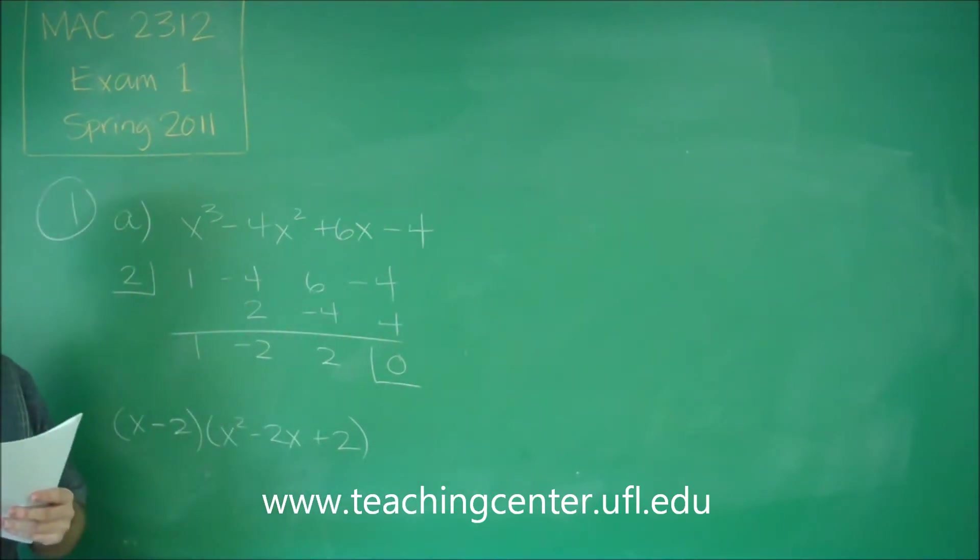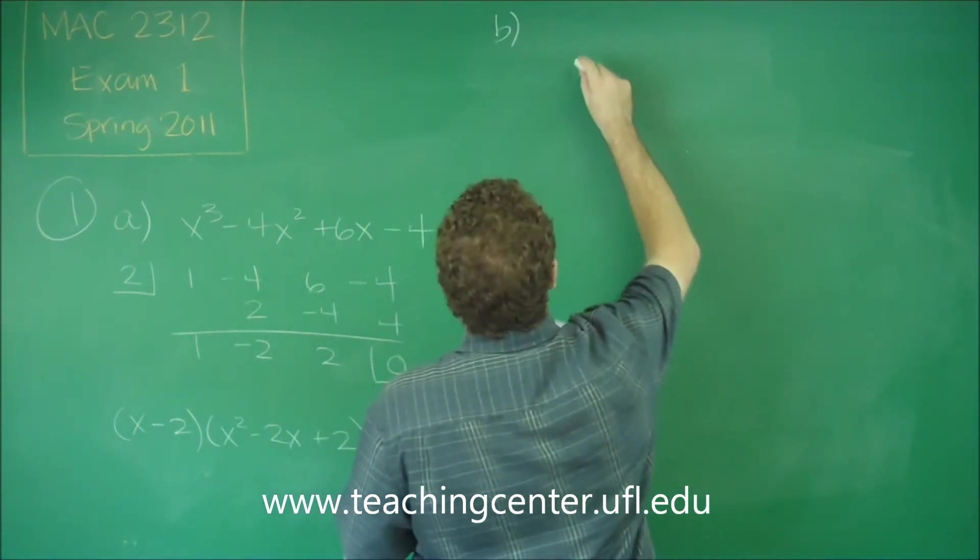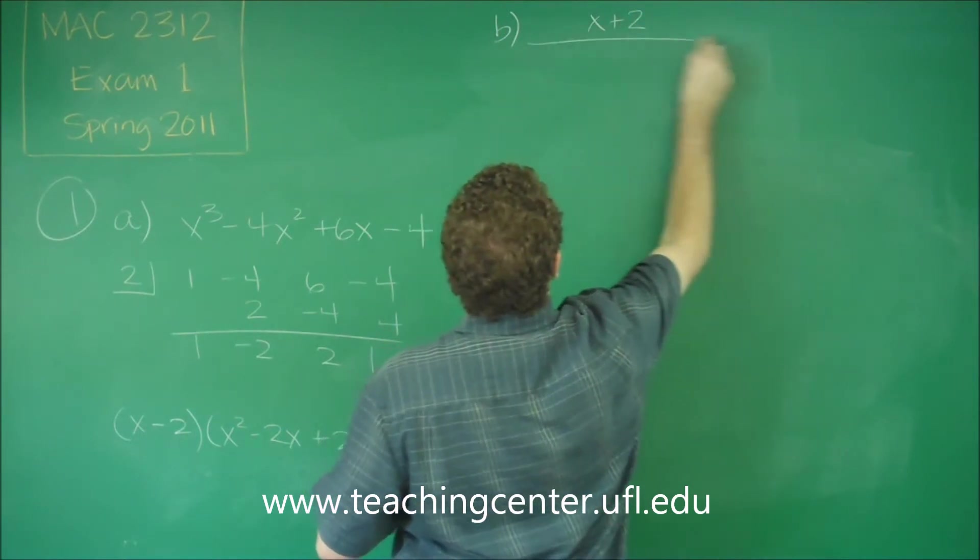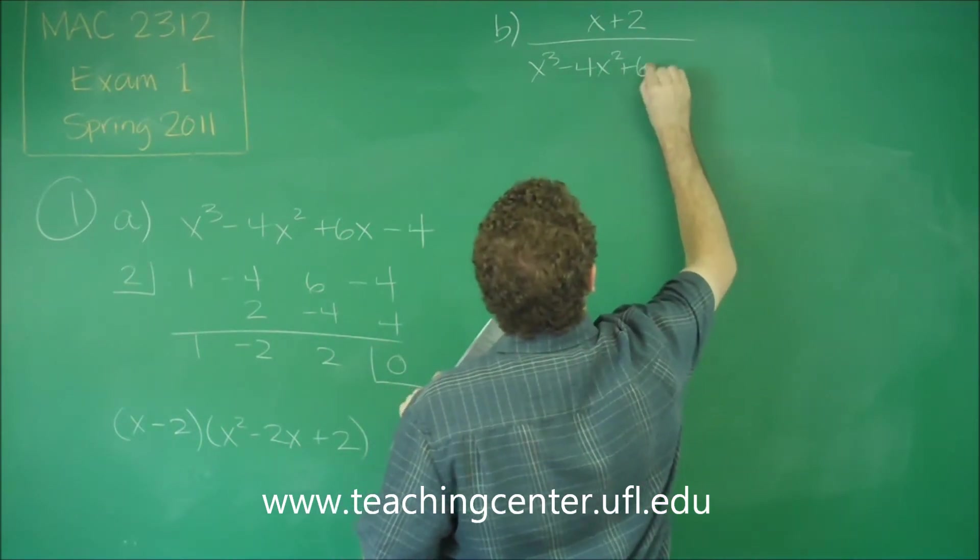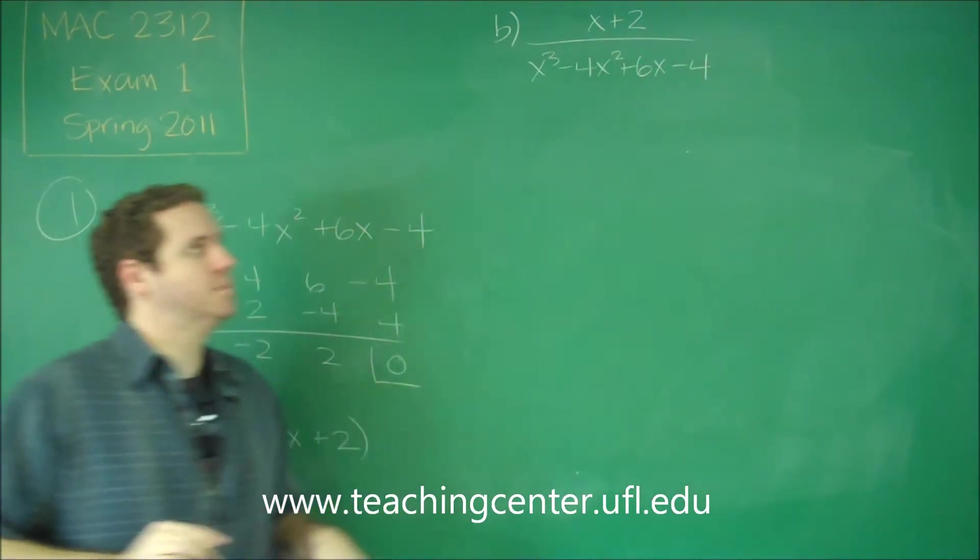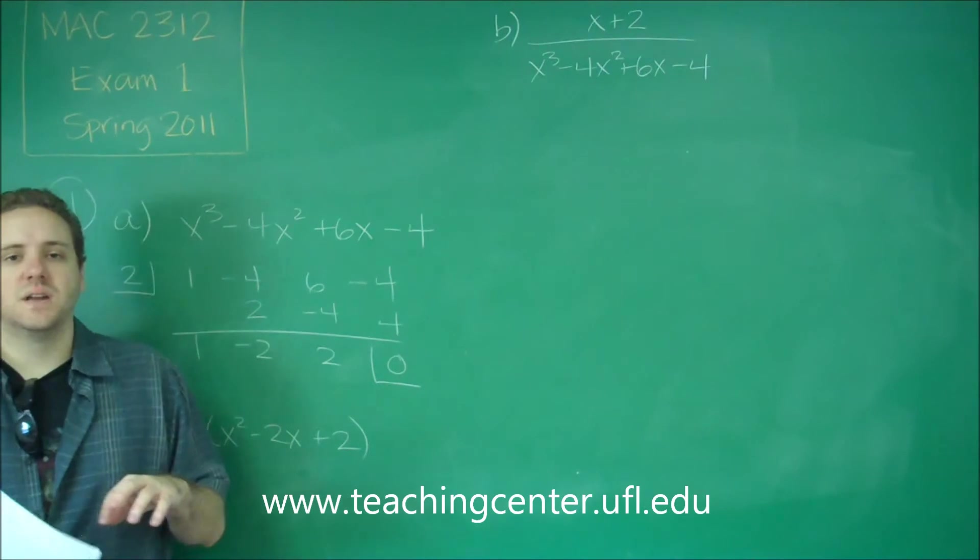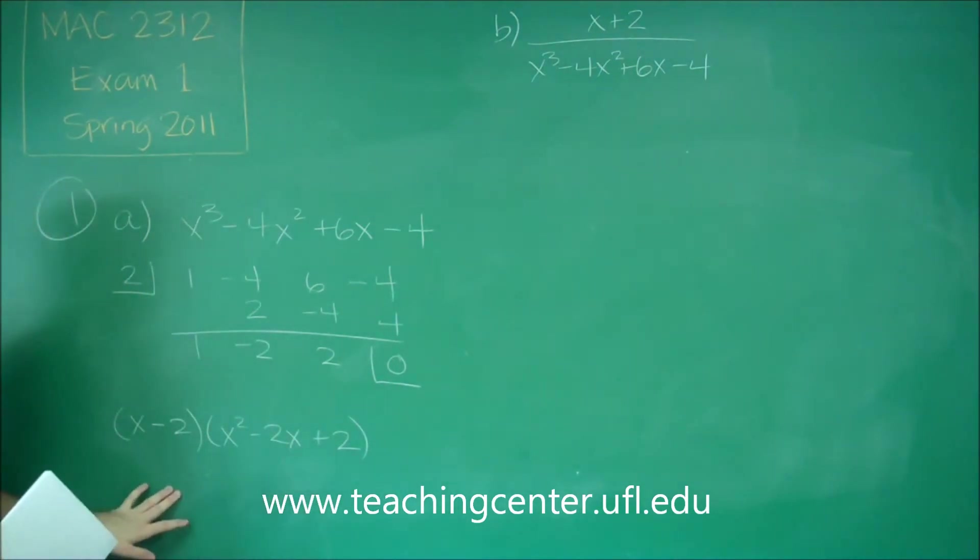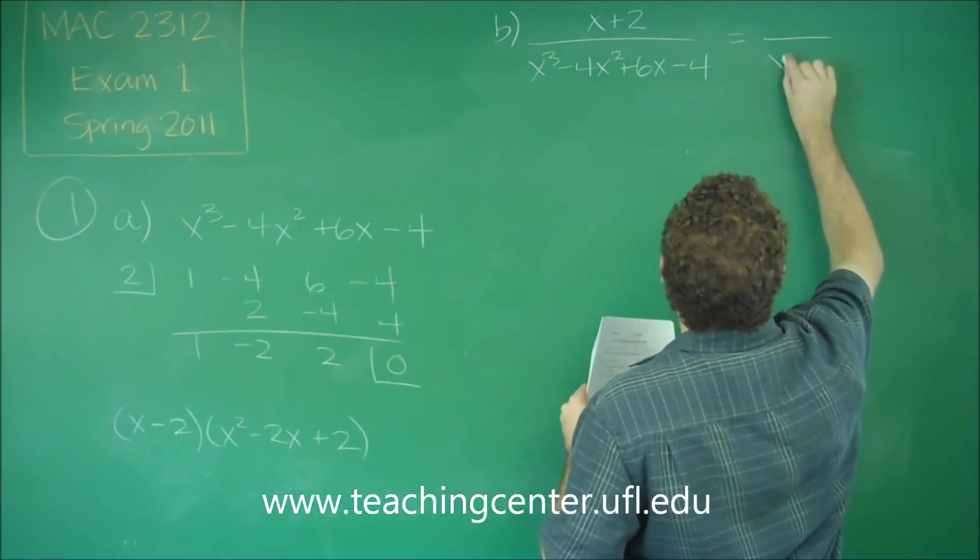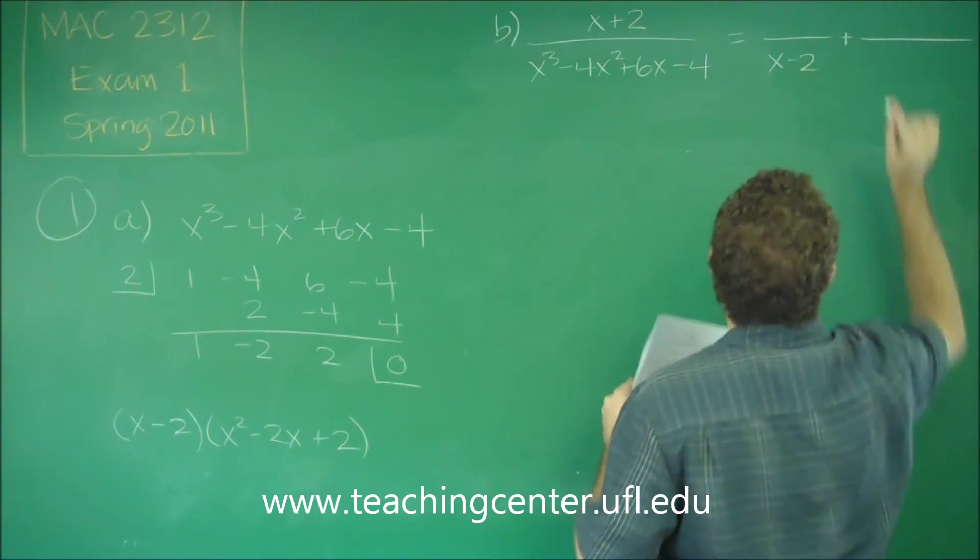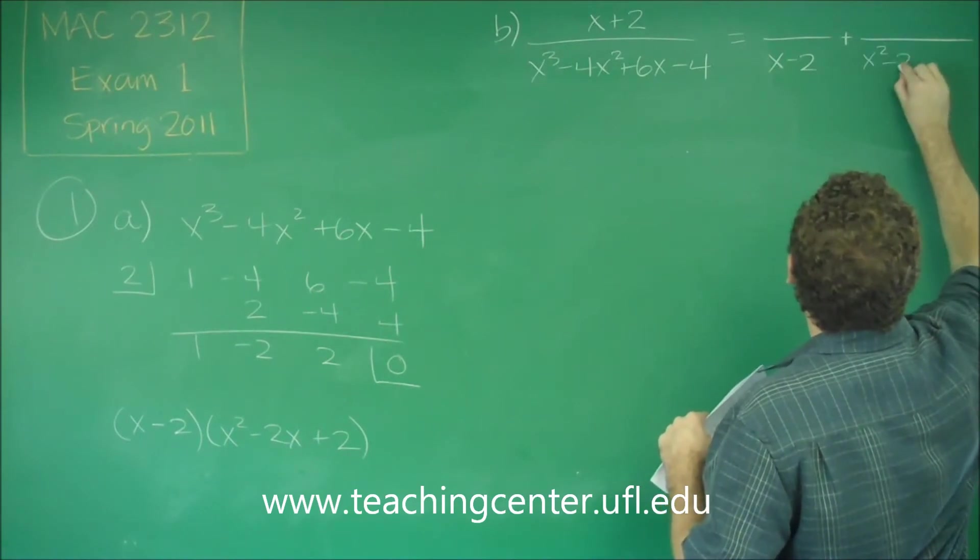So that's the factorization. So now if we were to do the partial fraction decomposition of x plus 2 divided by our cubic polynomial, remember that for partial fraction decomposition, we're going to separate this into multiple fractions, each one having the denominator of one of the factors. We only have two factors here, so we're going to have two fractions.